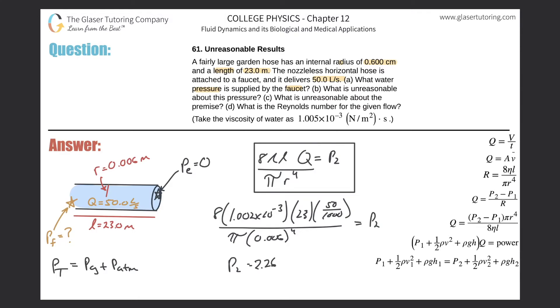And then take that all and divide it now by pi times 0.006 raised to the fourth. What do we get? We get a pressure now of about 2.26 times 10 raised to the sixth. This is in pascals. Now what's unreasonable about this?